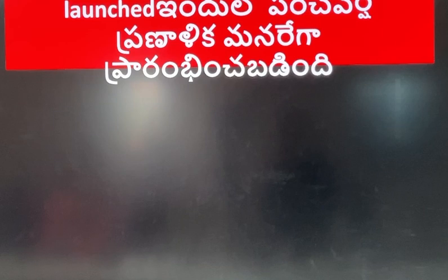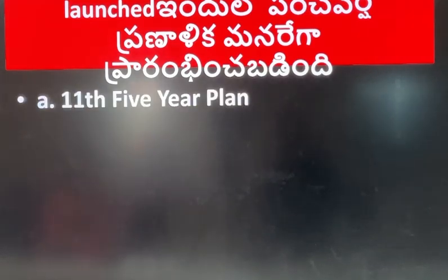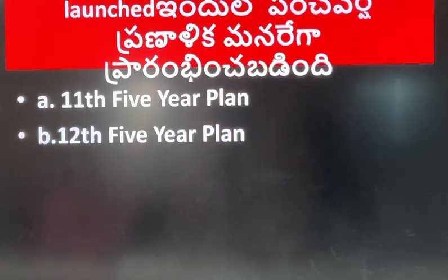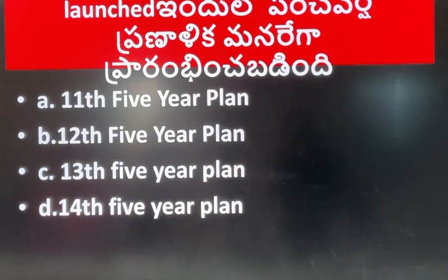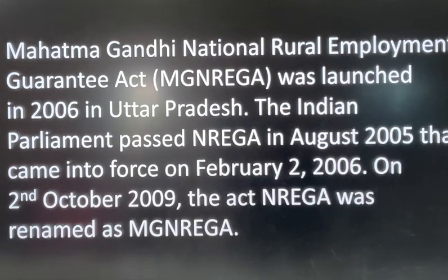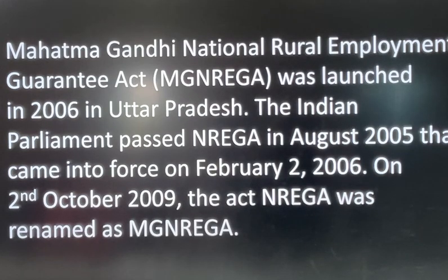Next one: in which Five Year Plan was MGNREGA launched? A. 11th Five Year Plan. B. 12th Five Year Plan. C. 13th Five Year Plan. D. 14th Five Year Plan. The answer is A, the 11th Five Year Plan, which was introduced in 2007. MGNREGA stands for Mahatma Gandhi National Rural Employment Guarantee Act, providing 100 days of employment.